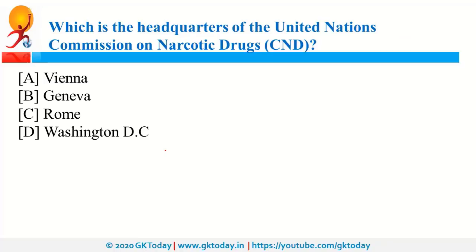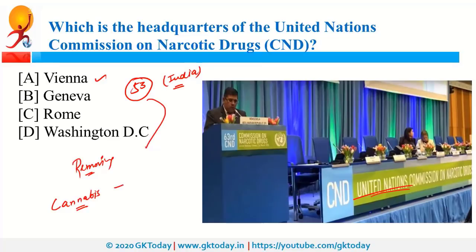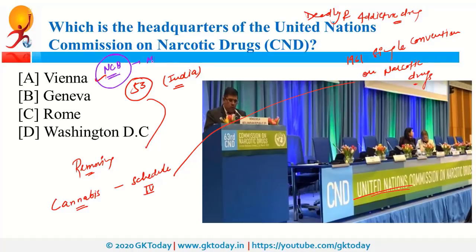Where is the headquarters of the United Nations Commission on Narcotic Drugs? The headquarters is in Vienna. Recently, the meeting of this commission was organized, and during that meeting 53 countries including India voted for removing cannabis from Schedule 4 of the 1961 Single Convention on Narcotic Drugs, where it was listed as a deadly and addictive drug. In India, we have NCB — Narcotics Control Bureau — which is under MHA, that is Ministry of Home Affairs. NCB is responsible for controlling drug menace and is the main authority for implementation of NDPS — Narcotics, Drug and Psychotropic Substances.